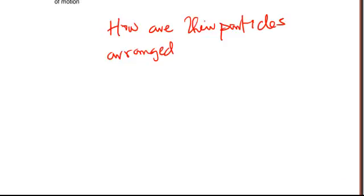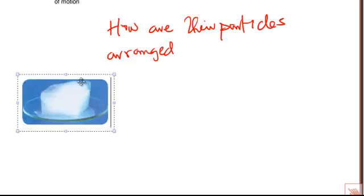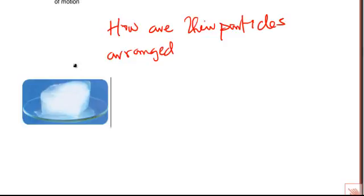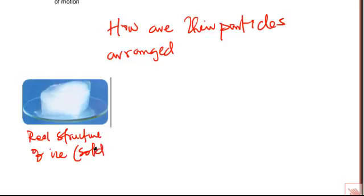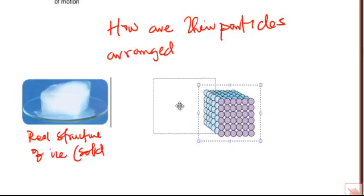Let's take solid again. This is how a solid actually looks — this is just an example. It may not be in this shape; it can be in different shapes. We know that solids have a definite shape. So if you go down to the atomic level, this is the real structure of ice. What is a solid? If we go down to the atomic level, how are the particles in a solid arranged?